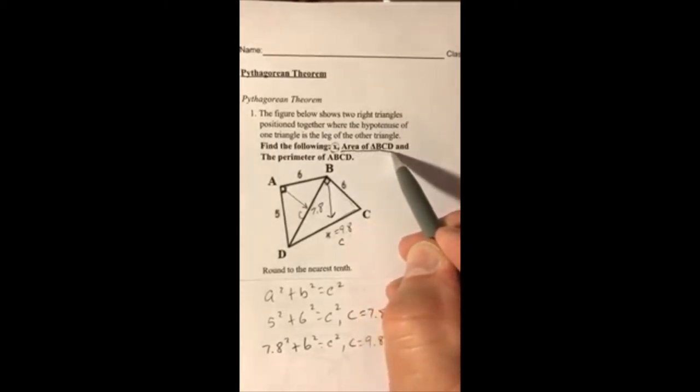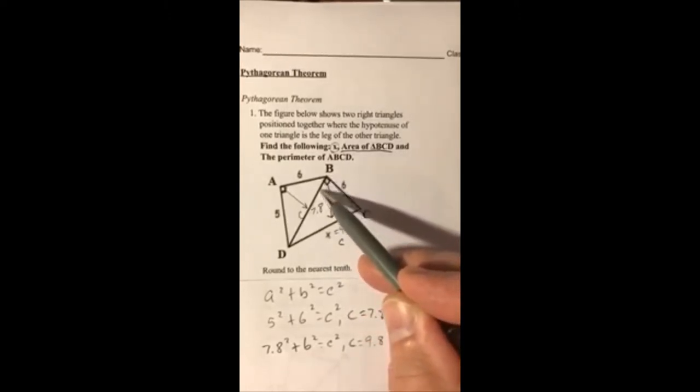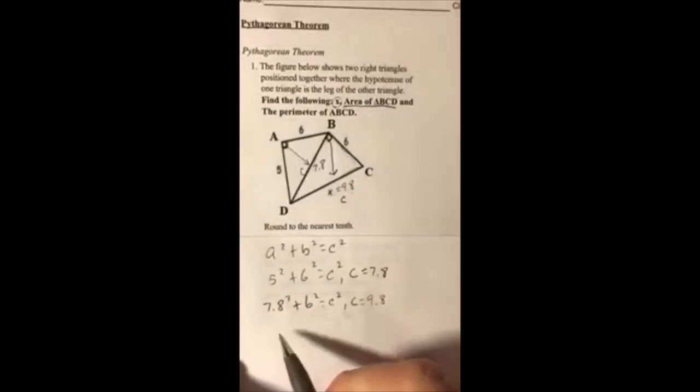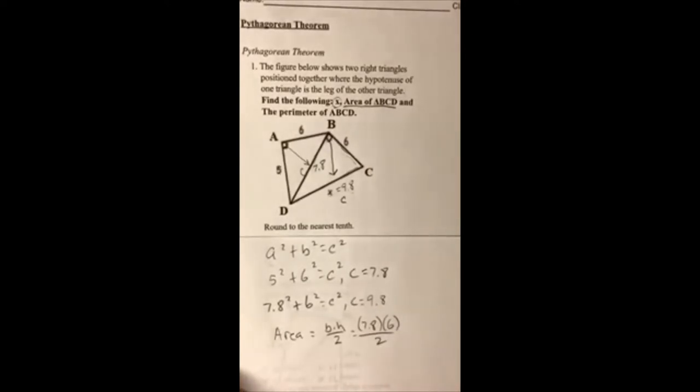The next thing is area of triangle BCD. The two sides that form the 90 are 7.8 and 6. The area is equal to base times height divided by 2. My base and height are 7.8 and 6, divide that by 2.